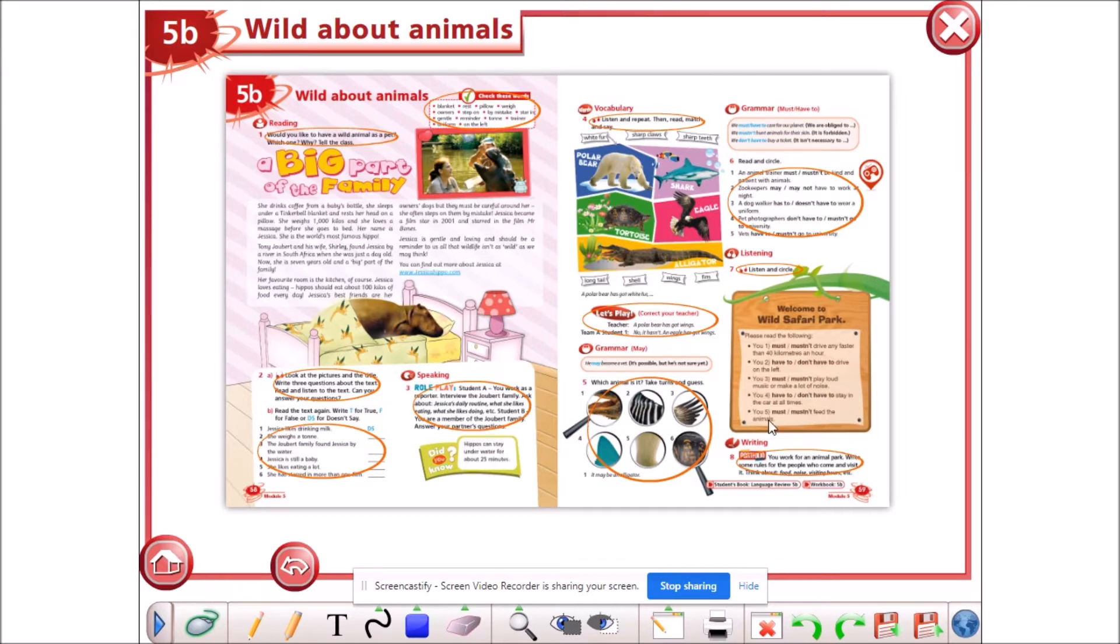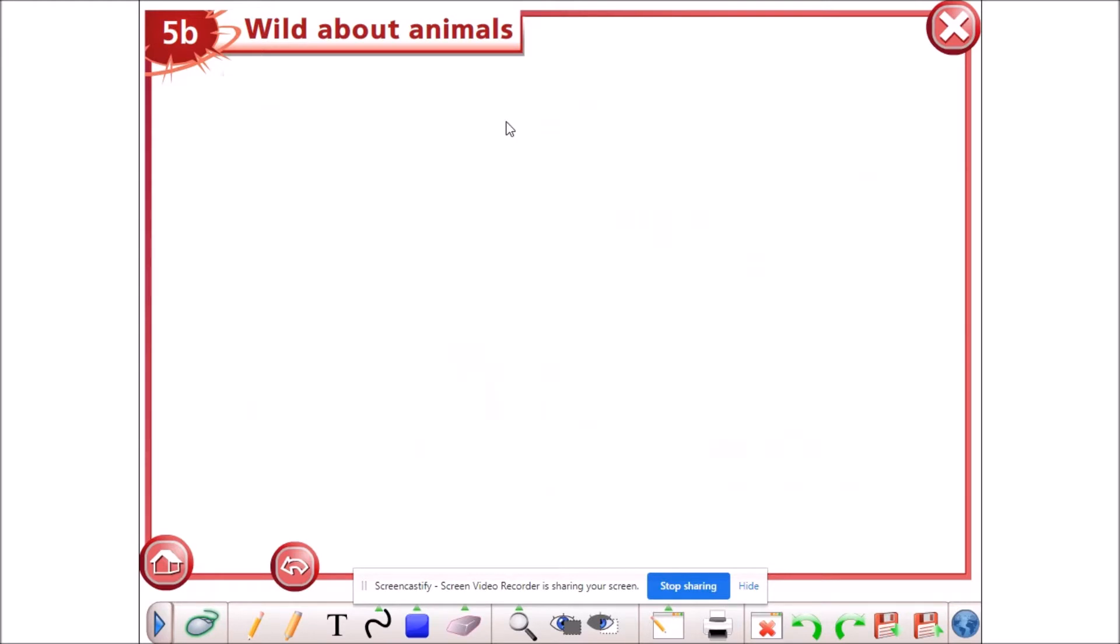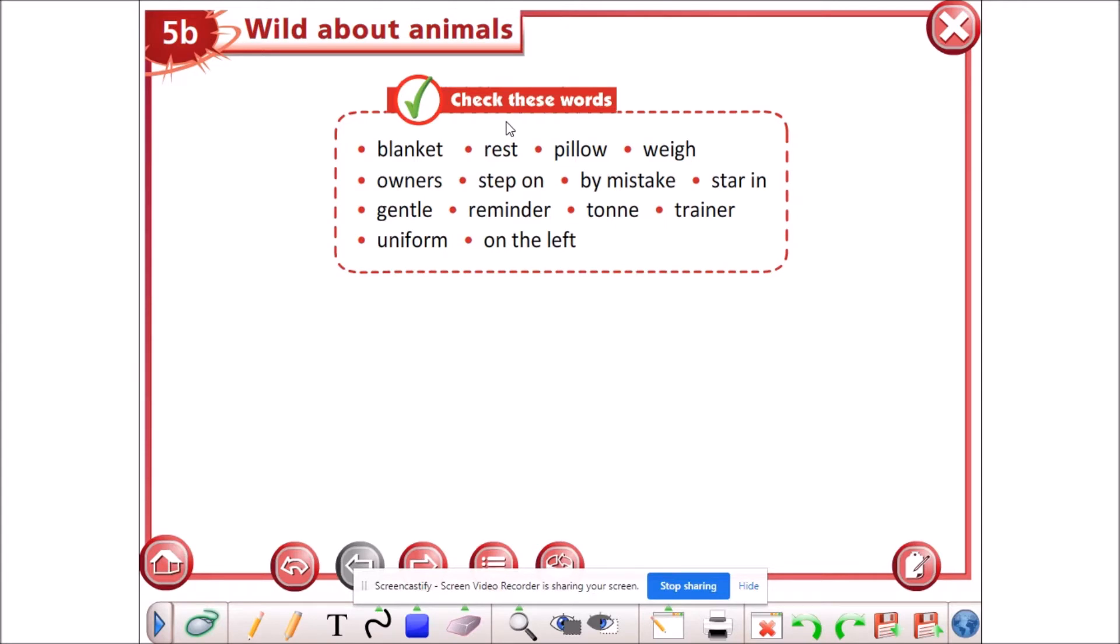Mustn't, have to, may. Let's begin with the new words as we always do. We go to the check these words box and see whether we have new words or not. This is the list for today: blanket, rest, pillow, weigh, owners, step on, by mistake, star in.